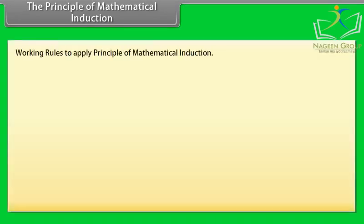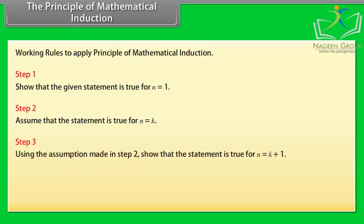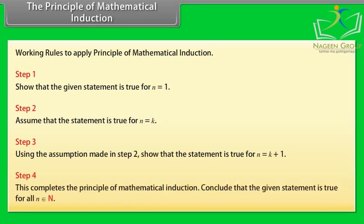Working rules to apply the principle of mathematical induction. Step 1: Show that the given statement is true for n equal to 1. Step 2: Assume that the statement is true for n equal to k. Step 3: Using the assumption made in step 2, show that the statement is true for n equal to k+1. Step 4: This completes the principle of mathematical induction. Conclude that the given statement is true for all n belonging to N.